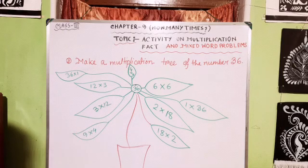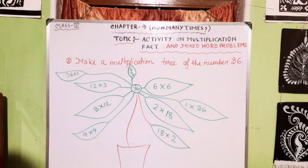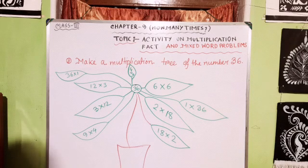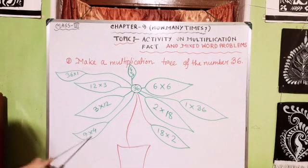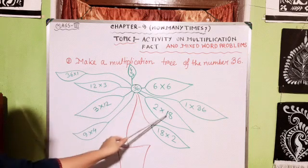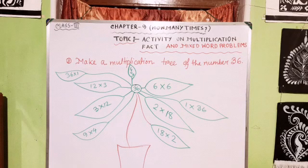Continuing: 3 twelves are 36, 12 threes are 36, 4 nines are 36, 9 fours are 36, 1 thirty-six is 36, 36 ones are 36, and 6 sixes are 36. So I have got 9 multiplication facts of 36. If you find out more, you can apply them as well. In this way, you can make a multiplication tree.